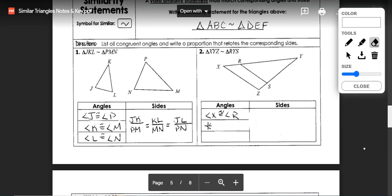For our angles you should have had X is congruent to R, Y is congruent to Y, and C is congruent to S.